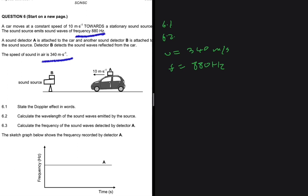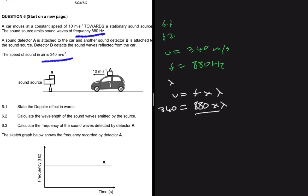What we are looking for is the wavelength. From 10th grade, we know that velocity equals frequency multiplied by wavelength. So the velocity is 340 meters per second, while our frequency is 880 hertz multiplied by the wavelength. We divide both sides by the frequency, and you will realize that our wavelength equals 0.39 meters. Nothing complicated — just identify your variables, substitute, and you get your answer.